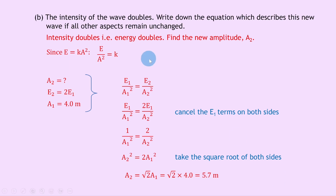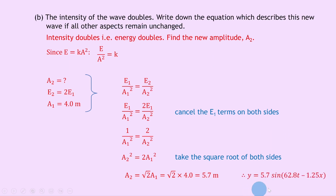So writing down the equation for the new wave with all other aspects unchanged, we get y equals 5.7 sine 62.8t minus 1.25x.